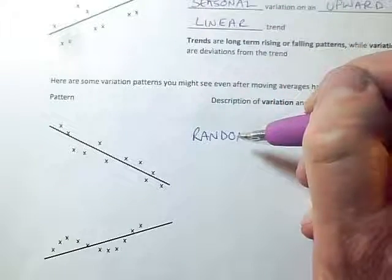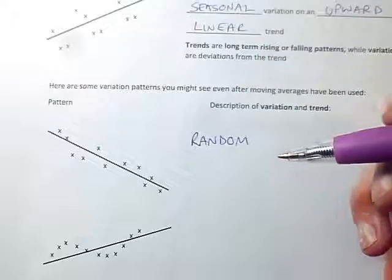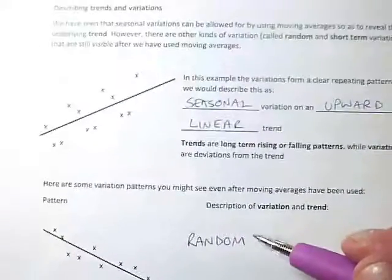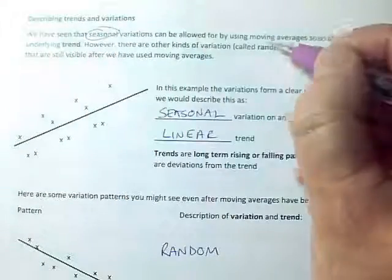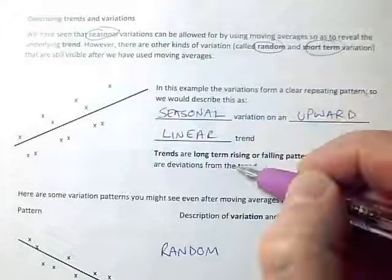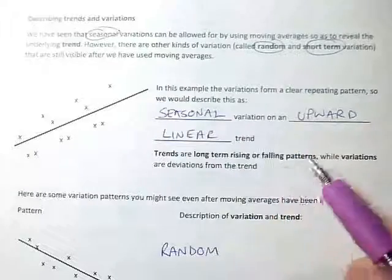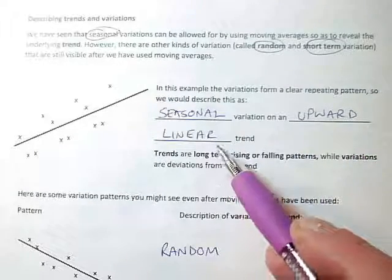So we have one word to describe the variation. It could be seasonal, it could be random, the third word which we'll come to later is short term. So they are listed here. We have got seasonal, random, short term variations. And the underlying trend could be upward or downward and it could be linear or nonlinear.